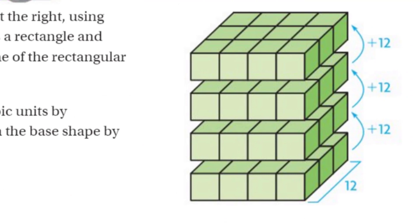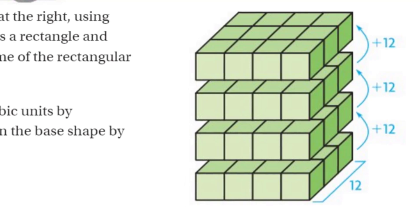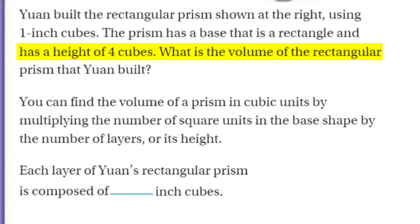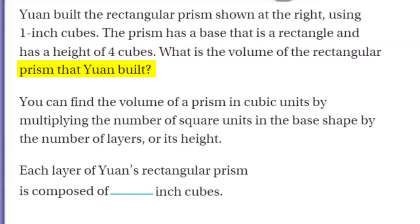Okay, there you go. Wow, very cool — I see layers! I see a layer of 12. Just like up above we had that 12, and now we have layers of 12. Back to the problem. The prism has a base that is a rectangle and has a height of 4 cubes. What is the volume of the rectangular prism that Yuan built?